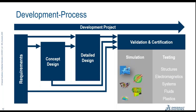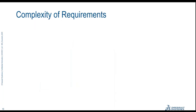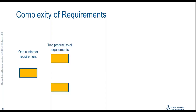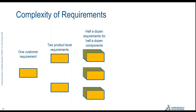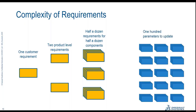When talking to customers about the complexity of requirements: you might have only one customer requirement, but when breaking it down to the product level it might already be two requirements. Digging even deeper — half a dozen requirements on half a dozen components, each with several parameters influencing the outcome — the complexity just explodes on the requirement side.